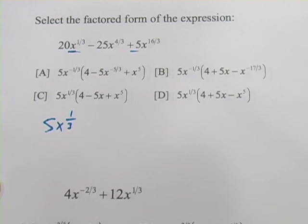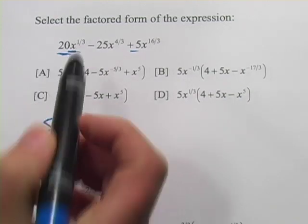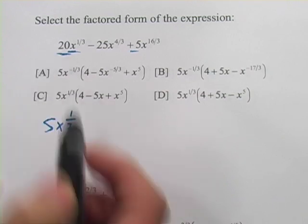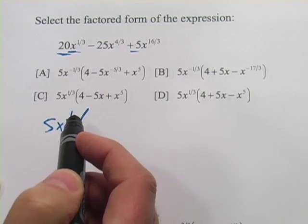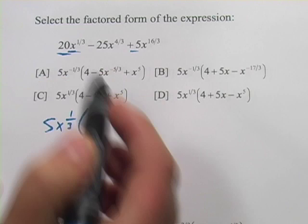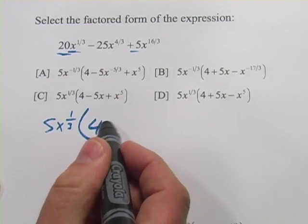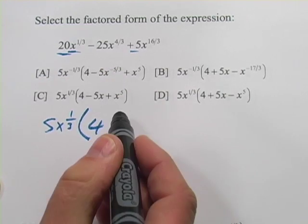Now when I say pull out, I mean divide. So if I divide this first term by 5x to the 1/3, well 20 divided by 5 is 4. x to the 1/3 divided by x to the 1/3 is 1, so 4 times 1 is just 4. So we're going to leave that.